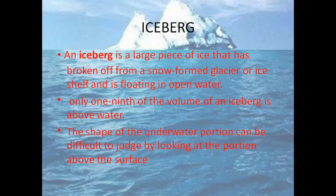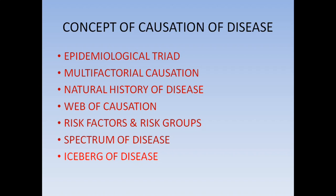An iceberg has only one-ninth of its volume visible above water — the majority, 90%, is below. Applying this to disease: in a population, only a small portion of disease cases are visible. The diagnosed people — those taking treatment, insulin, or other medications — represent the tip, while the majority are undiagnosed, living in the community around us.